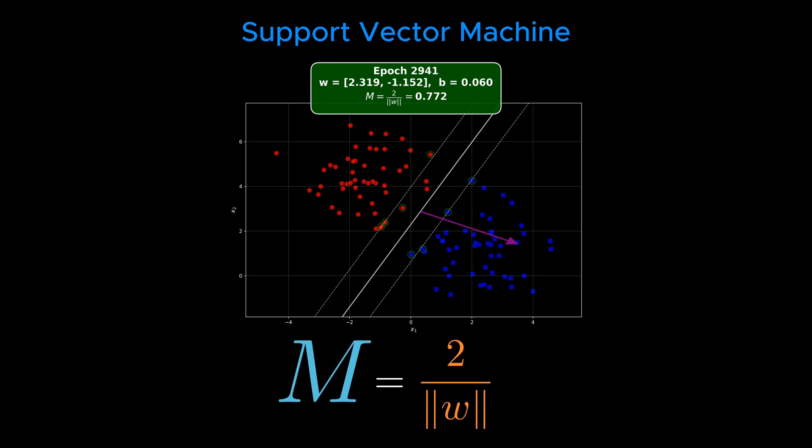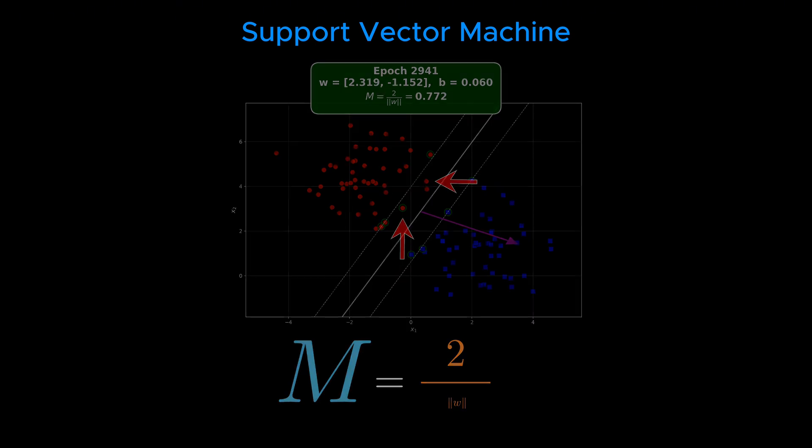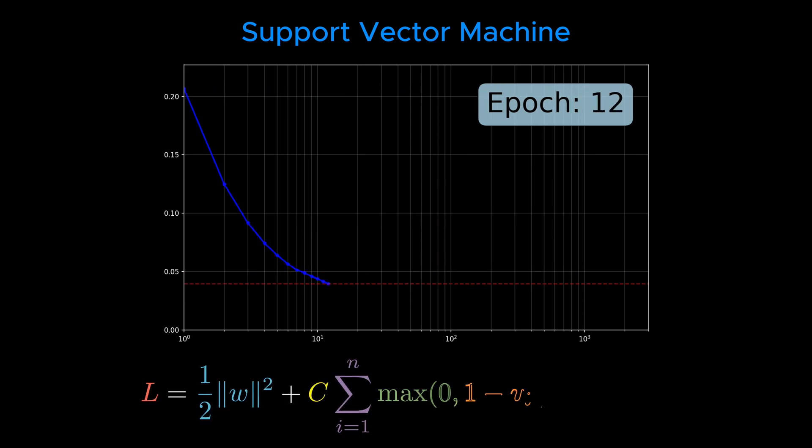Those nearest points are called support vectors, and the margin is given by the following equation. To make the margin large, we want to make the norm of W small. However, if we only minimize the norm of W, we might misclassify some data points. So we balance these two goals using the hinge loss function. Here, C controls how much we care about misclassifications, the second term, versus margin width, the first term. The first term ensures the margin stays wide, while the second penalizes errors or points too close to the boundary.